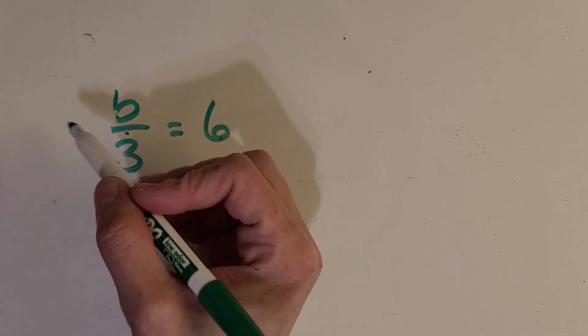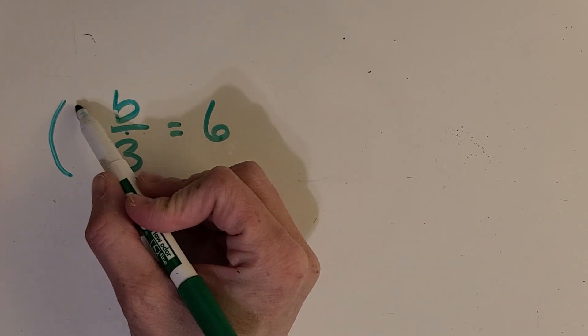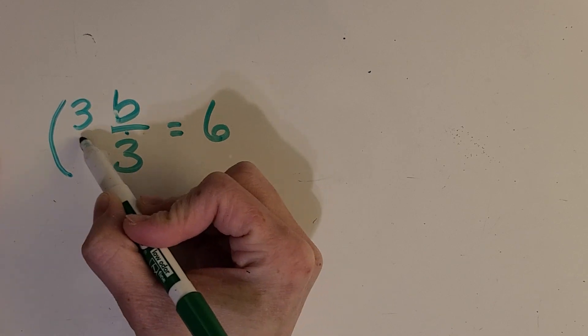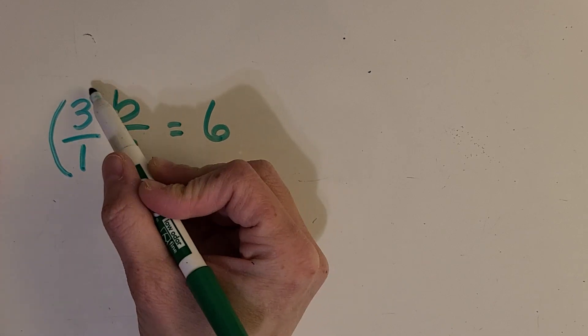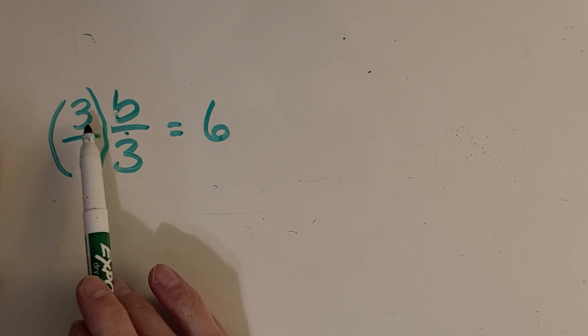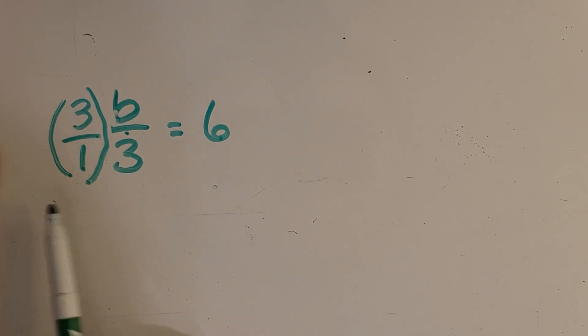You got it. Multiply by 3. And when we do that, you're catching on. We multiply by a fraction then, so that we can multiply the numerators and the denominators.